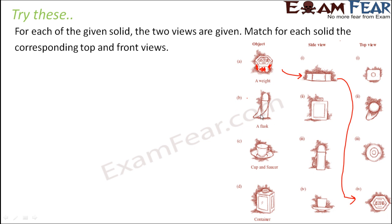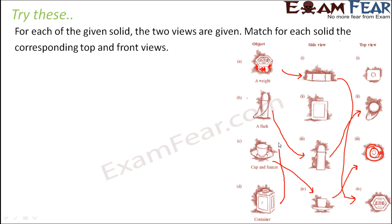The next object is a flask. From the side view it looks more or less the same flask, but from the top you only see the top portion of the cap — it looks somewhat like this, with the cap and a small part of the bottom visible. For the cup and saucer, from the side view it looks like this, and from the top you see just the periphery of the cup and saucer — you see the handle and the outline. The fourth object is a container: from the side you see just the side part, and from the top you see the lid and the top portion.